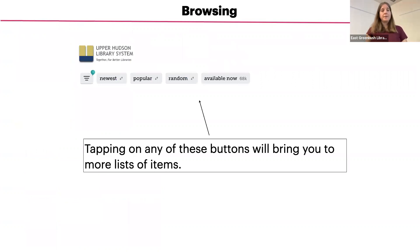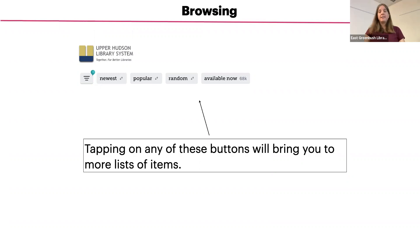Another way to browse is to use the navigation bar that appears at the top of the library home screen. 'Available Now' is a great way to find titles that are currently available. If you're looking to read or listen to something right now, that's the best way to find available items.